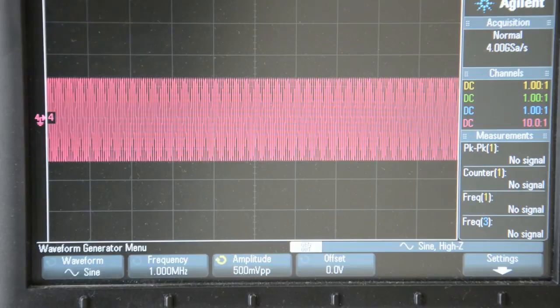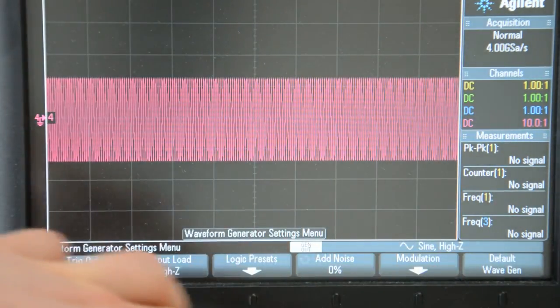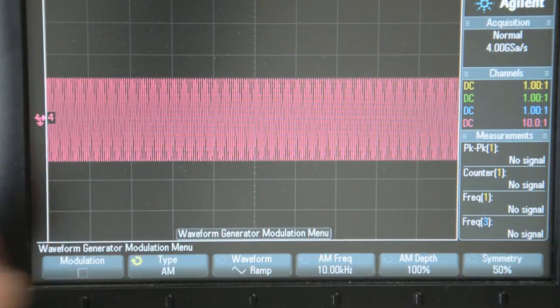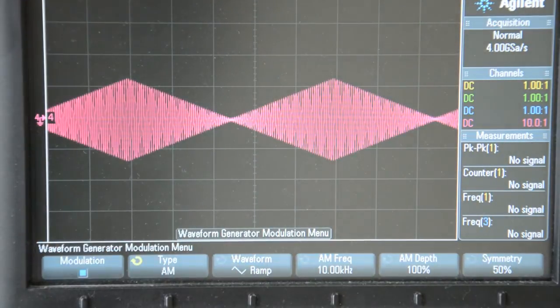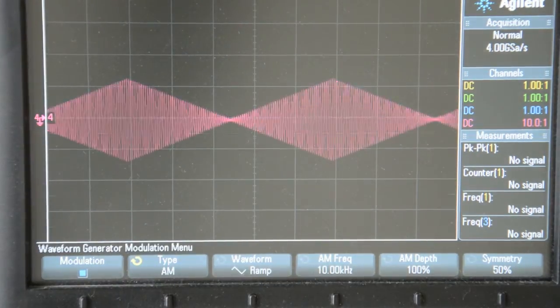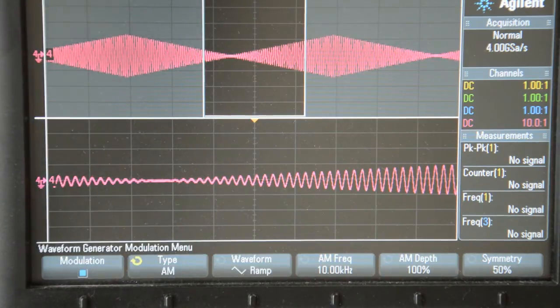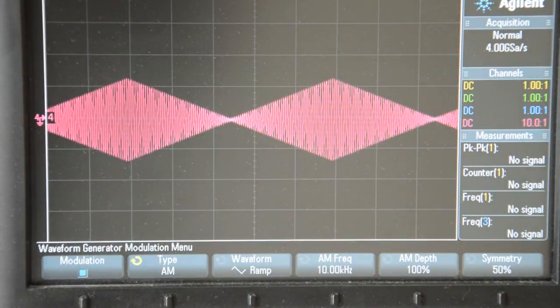I'm going to show you that waveform. If I turn on the signal generator that is built into this oscilloscope, this is set to a 1 MHz 500 mV peak-to-peak sine wave. But if I turn on modulation, I can actually turn this into an amplitude modulated signal that sort of has an amplitude that is ramping up and down. I can zoom into this to show you that this really is just a sine wave that has an increasing and decreasing amplitude.